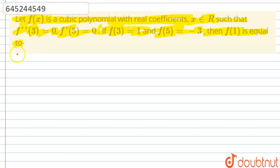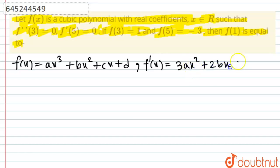So first let f(x) = ax³ + bx² + cx + d. Then f'(x) is basically 3ax² + 2bx + c. Now it is given that f'(5) is 0.